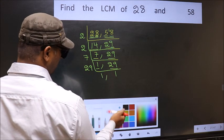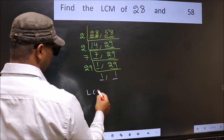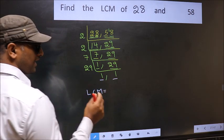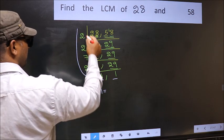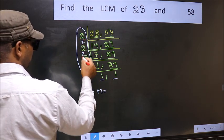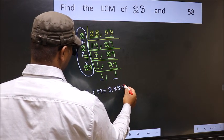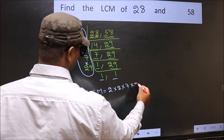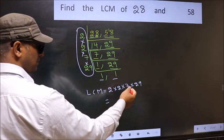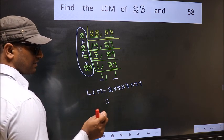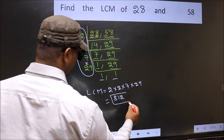So we got 1 in both places. So our LCM is the product of these numbers. That is 2 into 2, into 7, into 29. When we multiply these numbers, we get 812. This is our LCM.